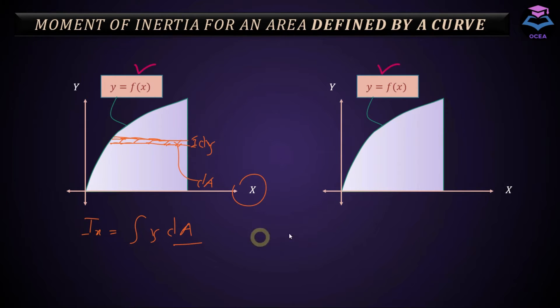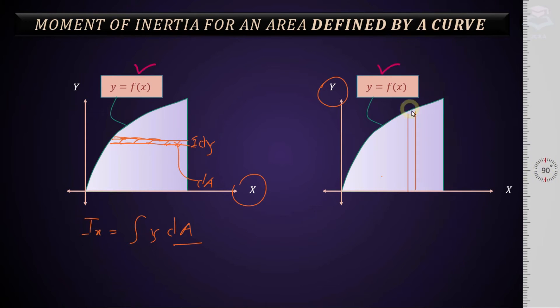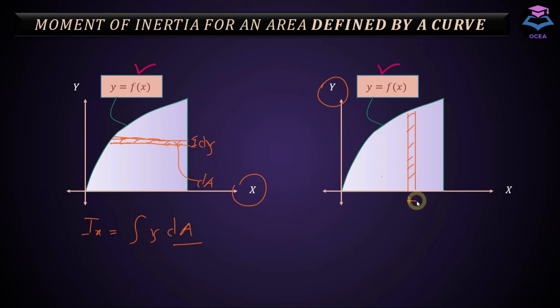Calculate dA of this area, this rectangular strip, and then substitute it here and solve it. You'll get your answer. Similarly, if you want to determine moment of inertia about y axis, you just need to draw a strip parallel to it.